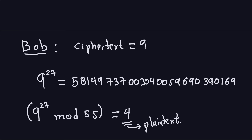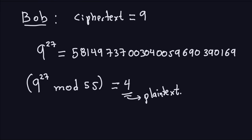Bob can recover the plaintext because of the choices made for n, e, and d. If those values are chosen correctly according to the RSA key-generation algorithm, the decryption always gives back the plaintext. I'll show later why this works — a kind of proof or explanation of why taking these powers and then modulo n, the product of two primes, always recovers the original message. In this example the numbers were small, but that's not always the case.